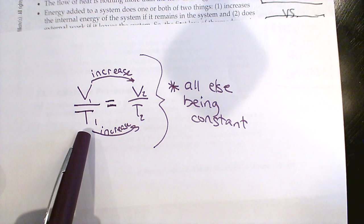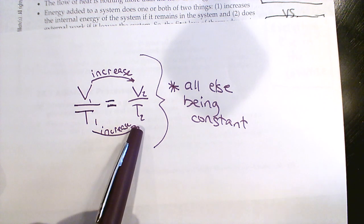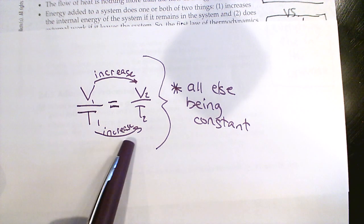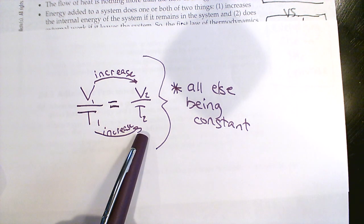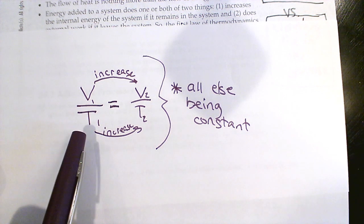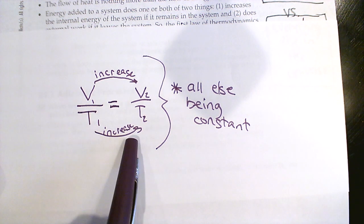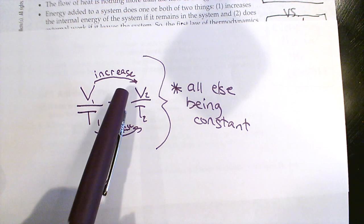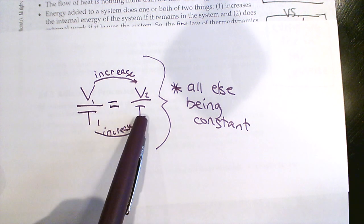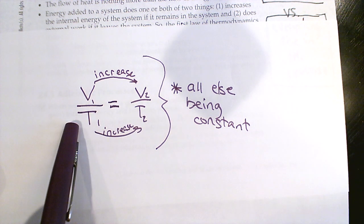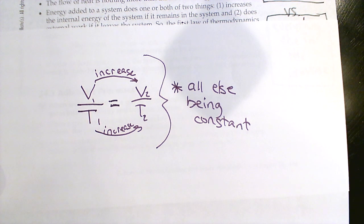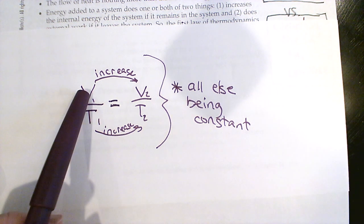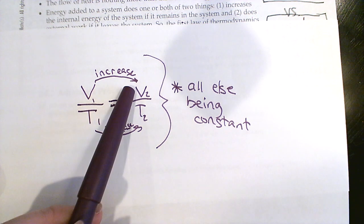Probably, in order to make the temperature increase, what we were doing is adding heat to the system. This relationship is generally true if the volume is changing in reaction to the temperature changing. But what if instead the volume changes really quickly and the temperature is changing in reaction to that?